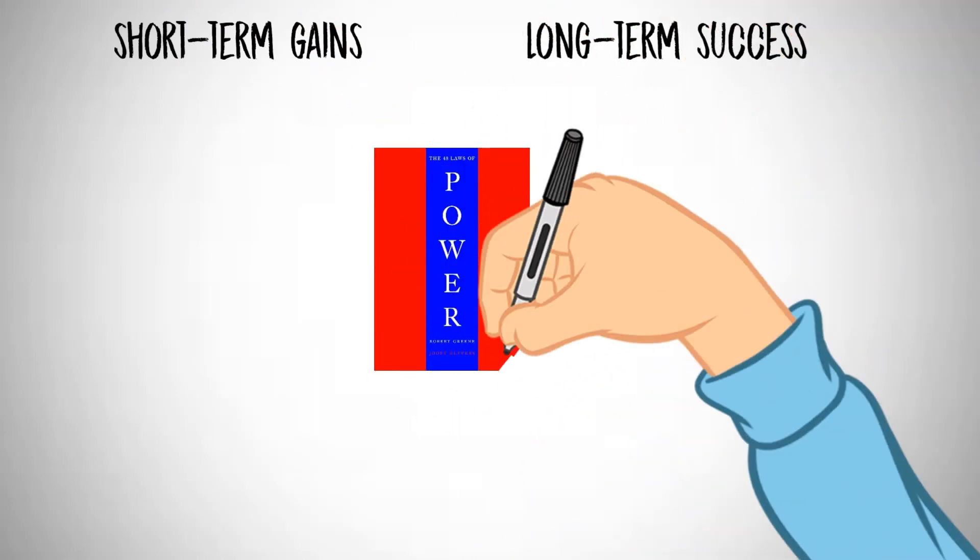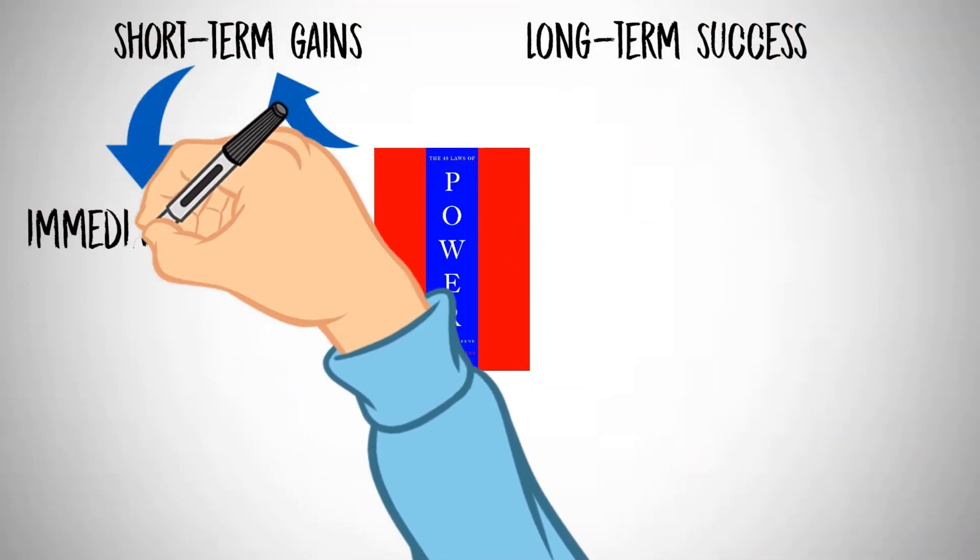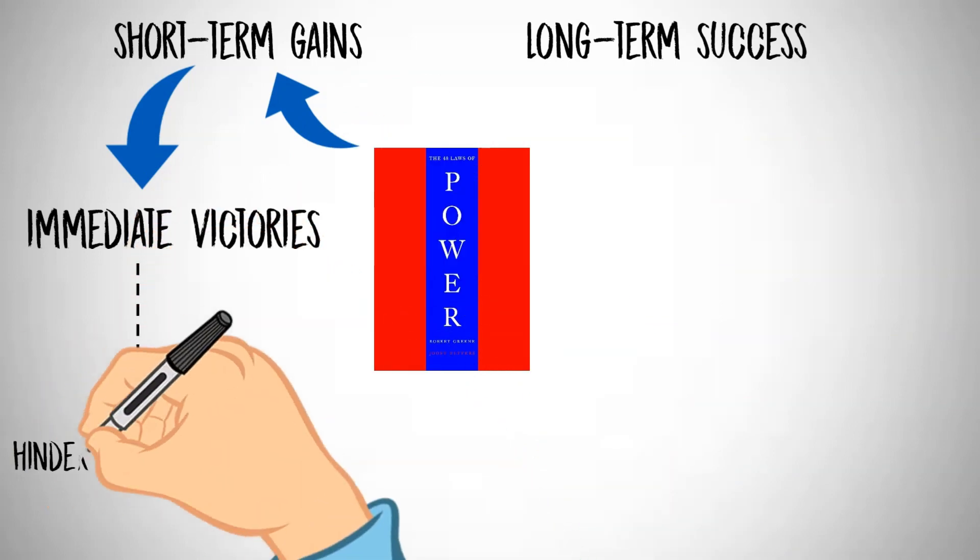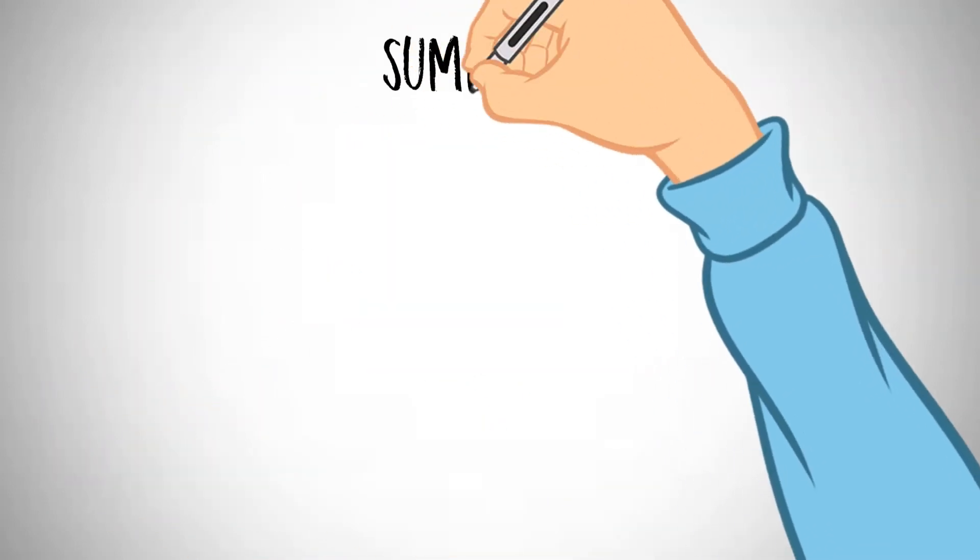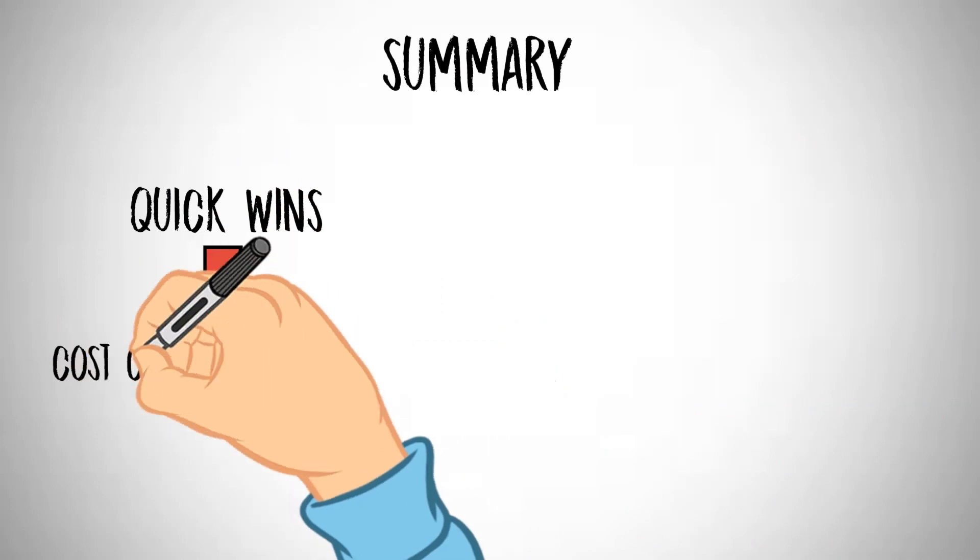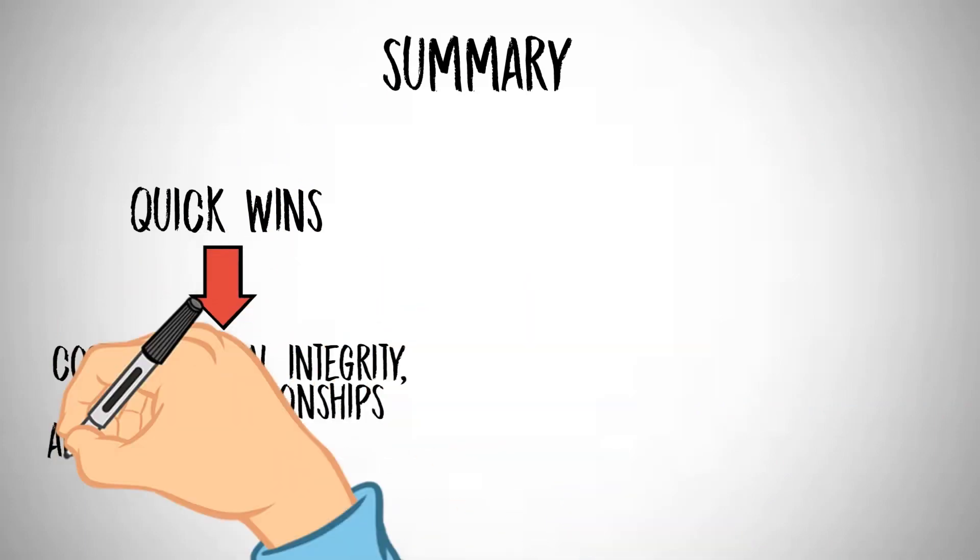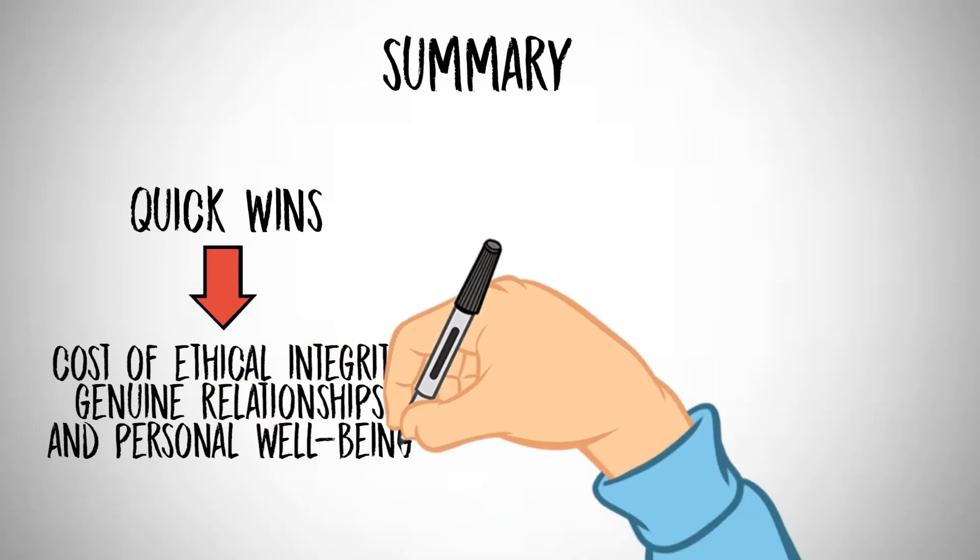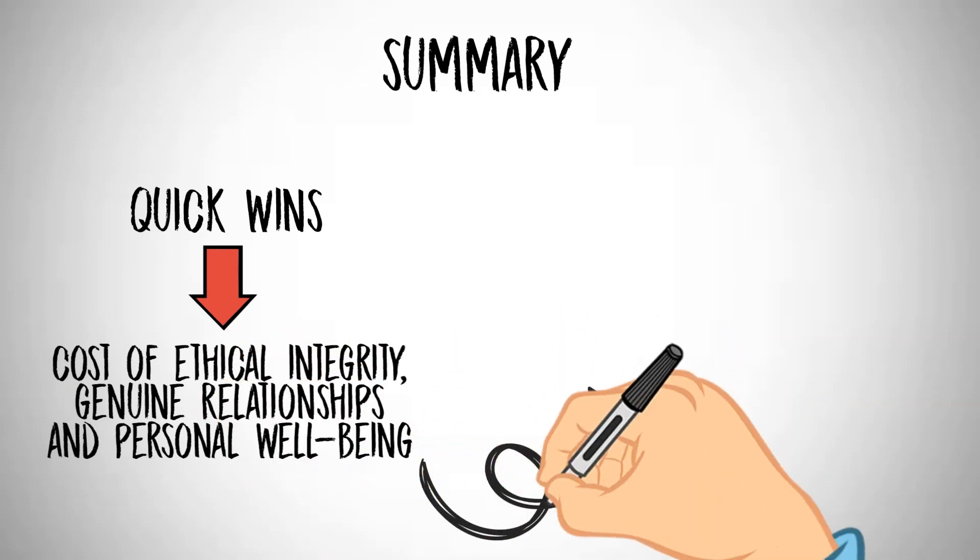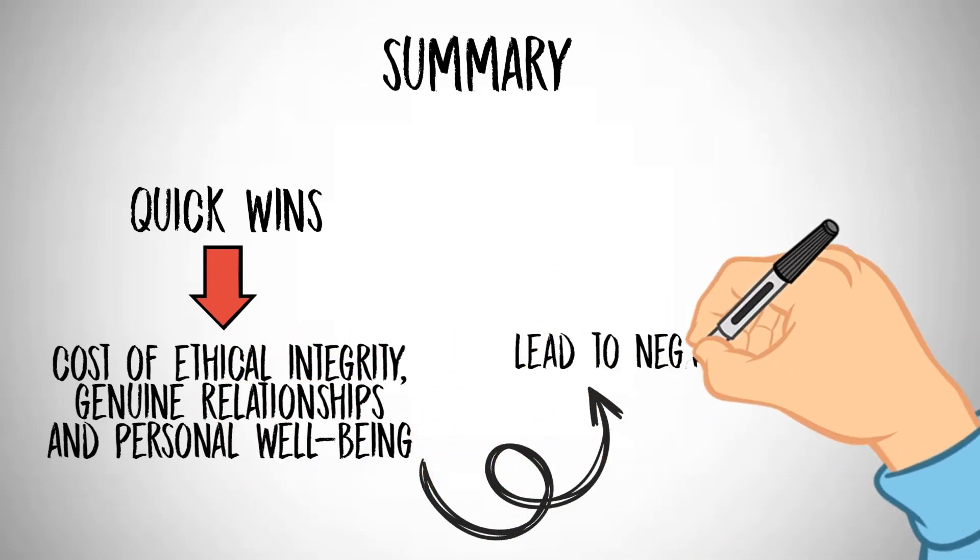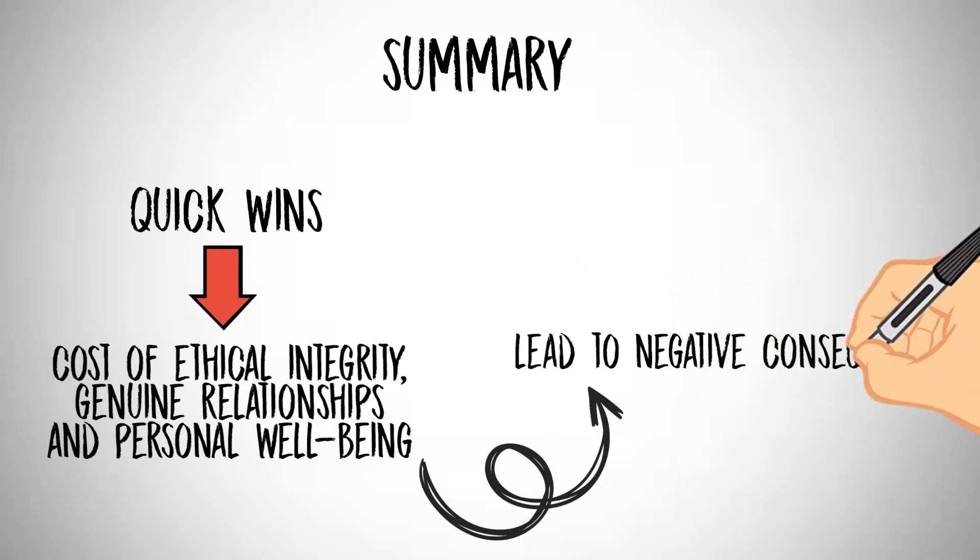Individuals may find that their accomplishments feel hollow if they were attained by exploiting others. The book's tactics often prioritize short-term gains over long-term success. This approach might result in immediate victories, but it can hinder sustainable growth and development. In summary, while the book's strategies may offer quick wins in terms of gaining power, they often come at the cost of ethical integrity, genuine relationships, and personal well-being.